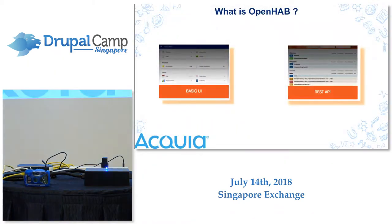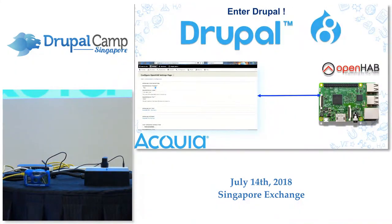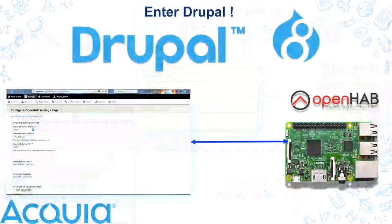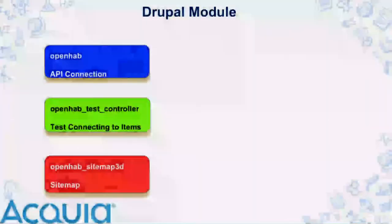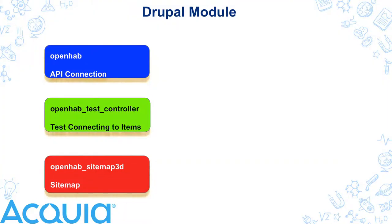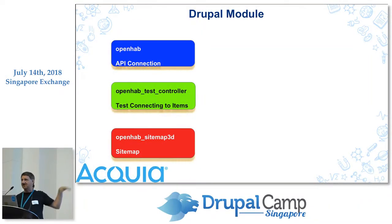So basically from that, I was playing with OpenHAB — turning things off and on — and I thought, how can I use Drupal? So what I've done is produce a module that talks to the OpenHAB server. The module consists of a core module — the top one is OpenHAB — which basically talks to the API connection. A tester, so I can put in the name of an item and test that. And a sitemap, which is a collection of items that I can control.